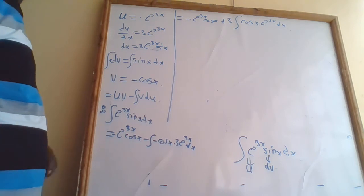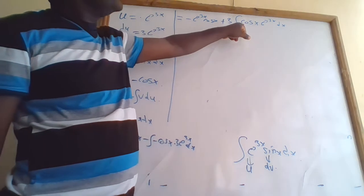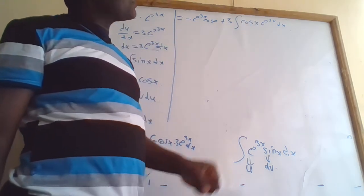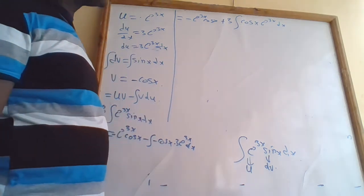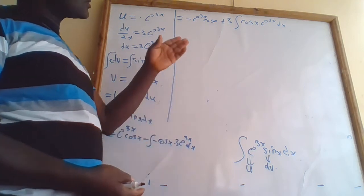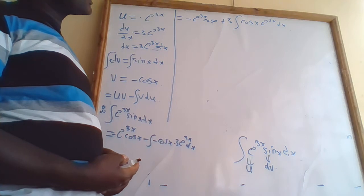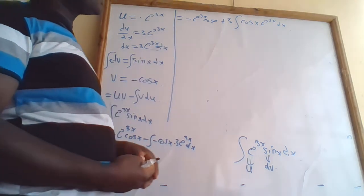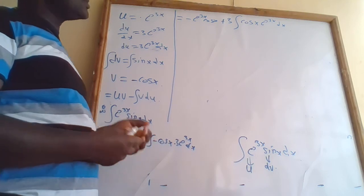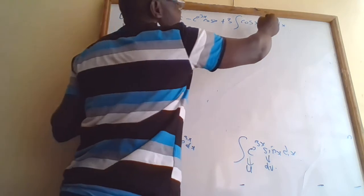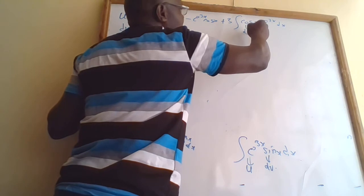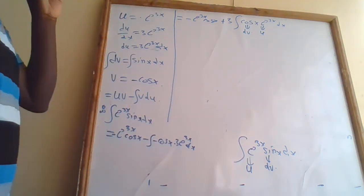At this point again, we need to perform integration by parts. We have cos(x) and e^(3x). So we need to do the assigning again. The log term is not present. The power of x is not present. Therefore the exponential function is taken as u, so e^(3x) is u, and cos(x) dx will be our dv.